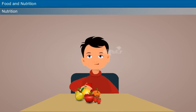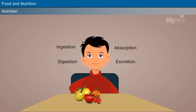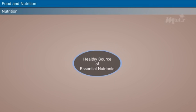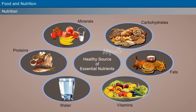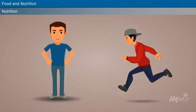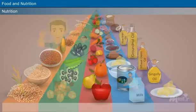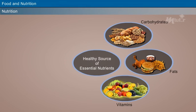Nutrition is the study of nutrients in food and in the living body. It includes everything that happens from the time food is consumed until it is used by the body for various functions. The science of nutrition deals with what nutrients we need, how much we need, why we need them, and where we can get them.